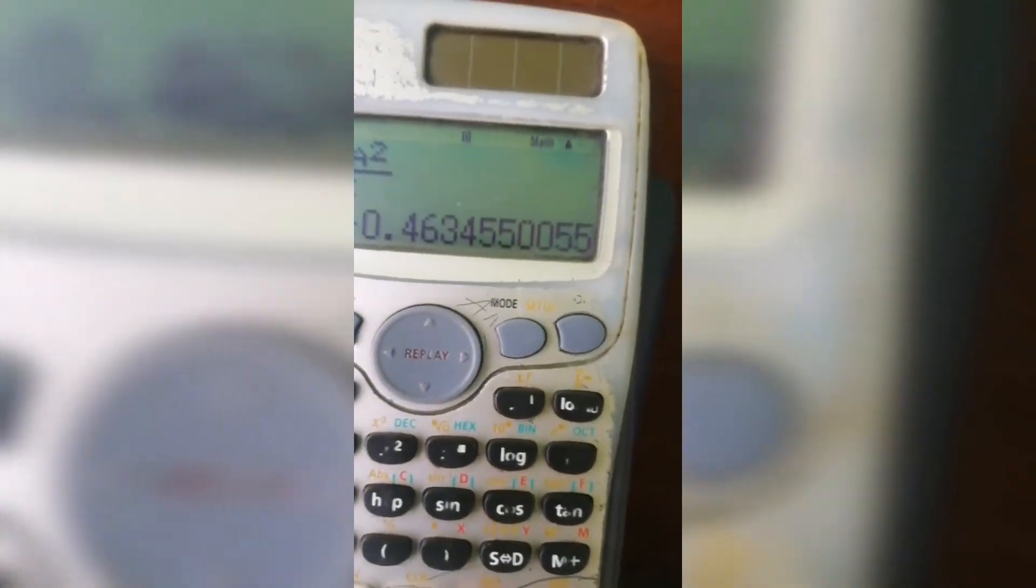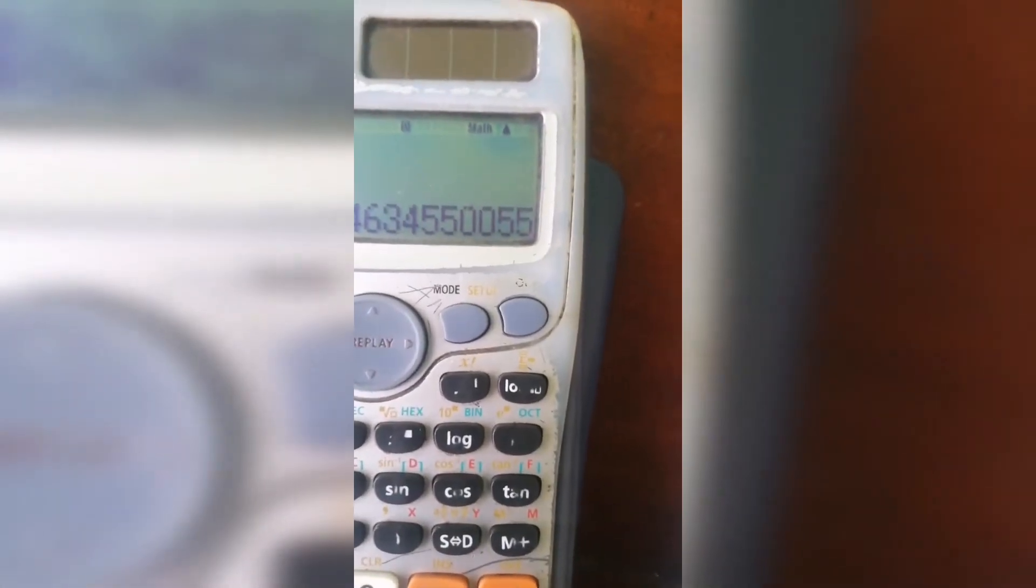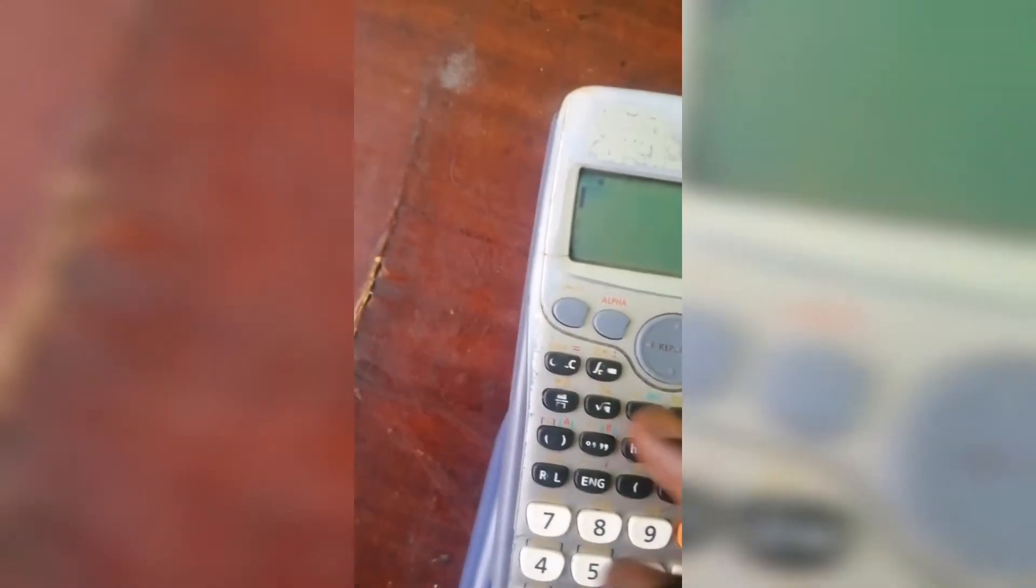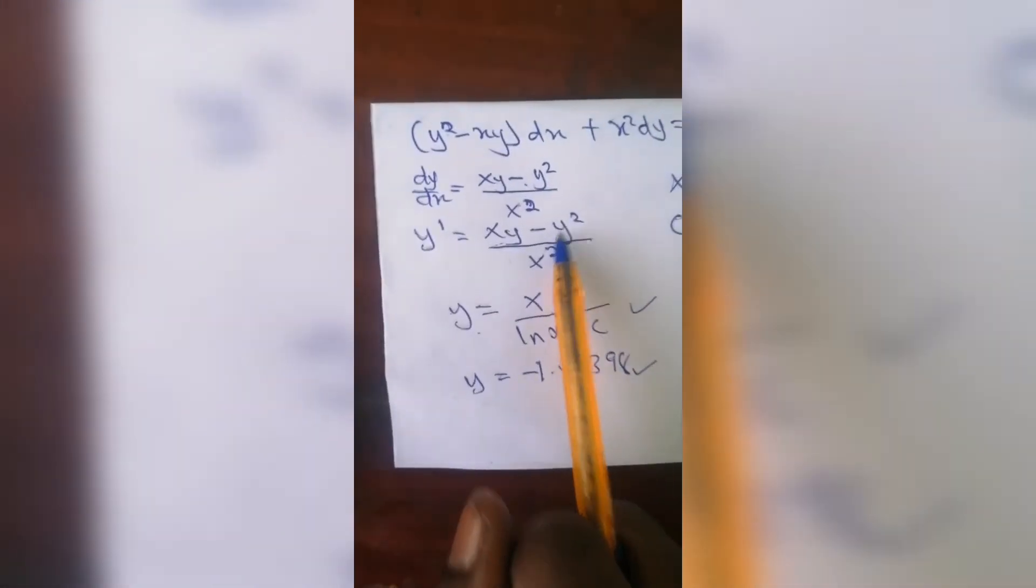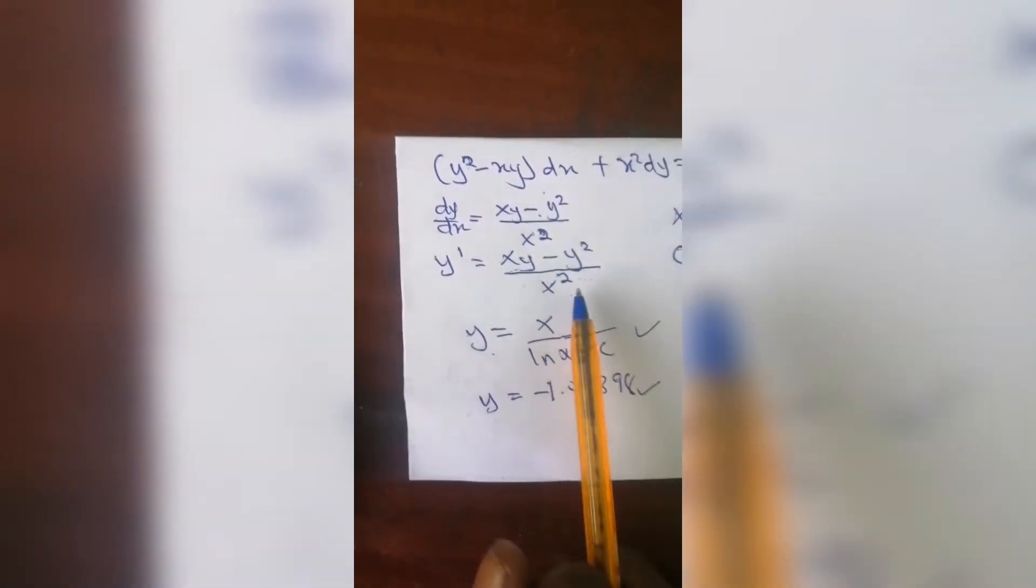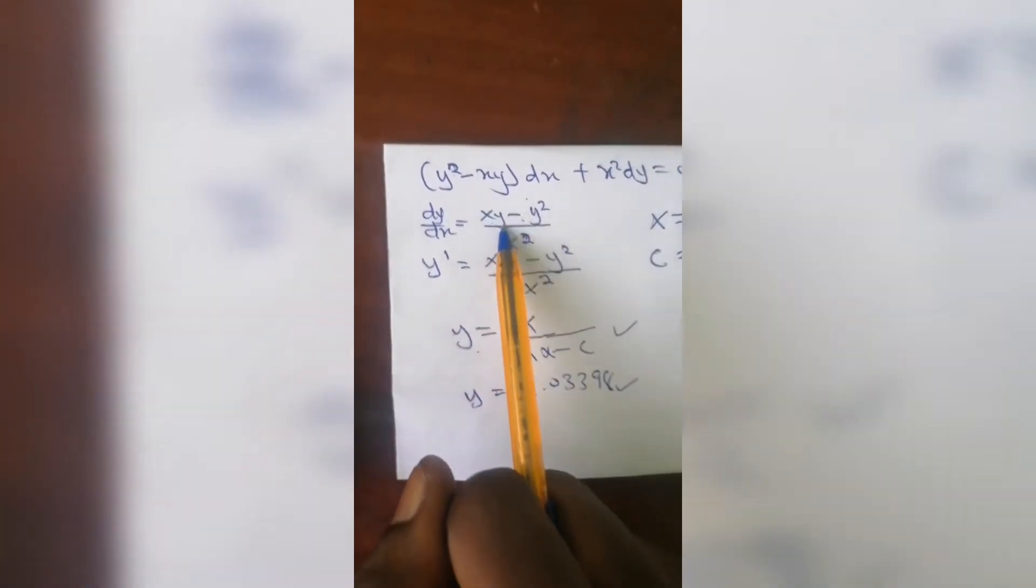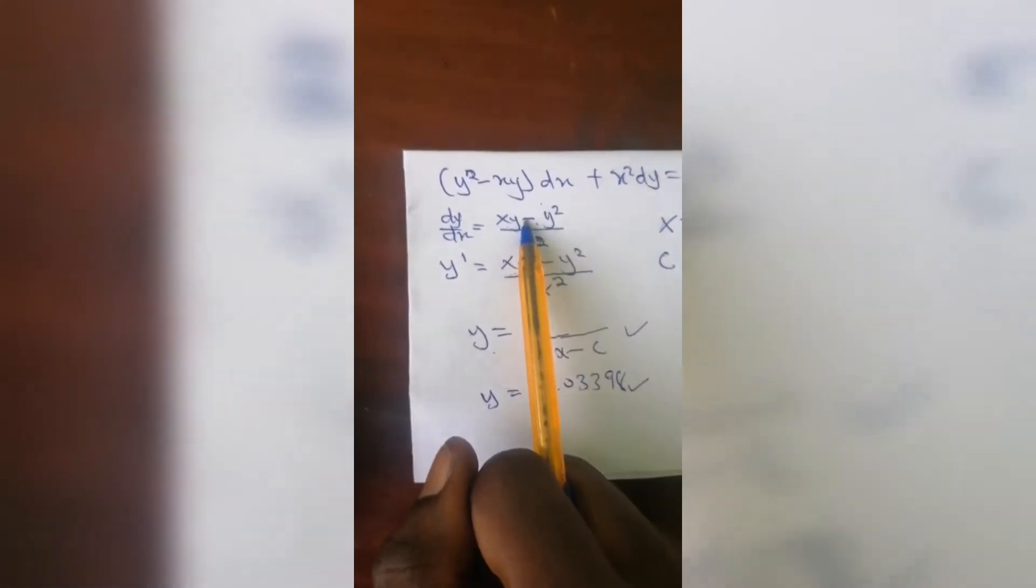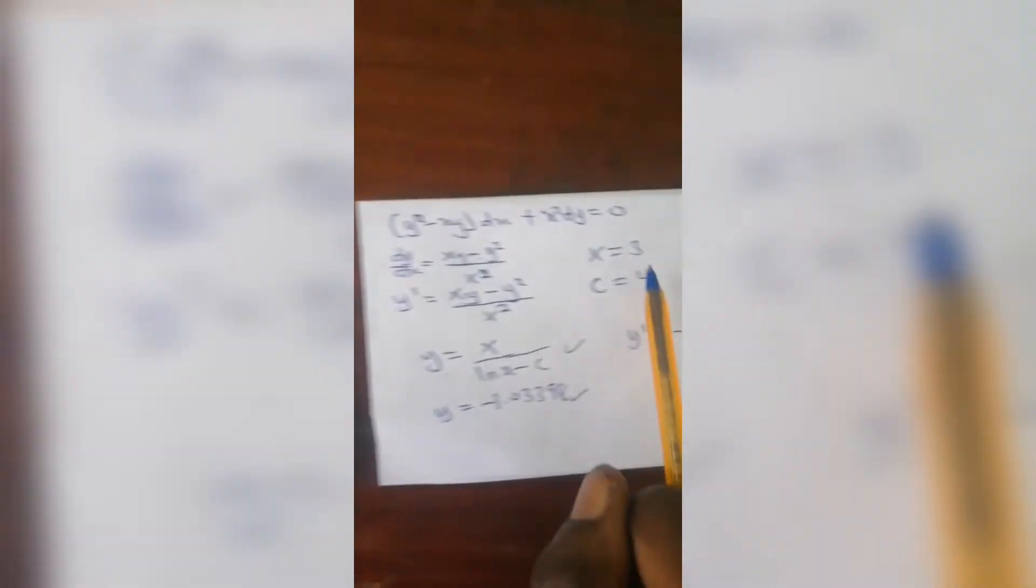That value will give you y' here to be equal to negative 0.46345. We have it here. Now what you do is you therefore go back here and use the calculator to differentiate. Press this and this to differentiate. When you differentiate, you are going to differentiate the answer.